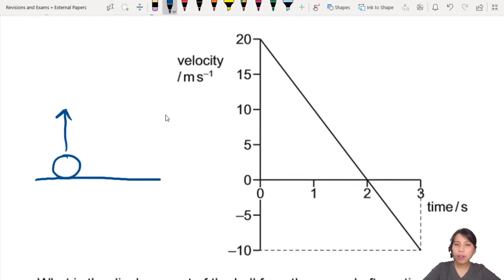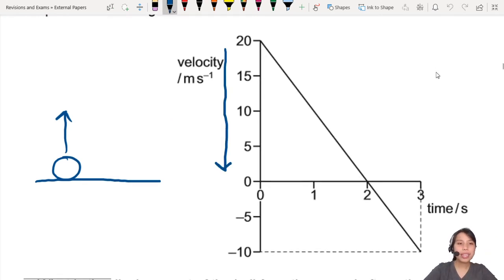First thing, you can see that the velocity is decreasing from 20, decreases to zero. That means this ball will go up and eventually reach a maximum height and stop. So something like this, if you draw the path of the ball, it starts at the bottom, goes to the top, reaches there.